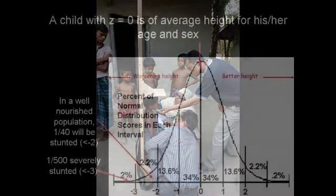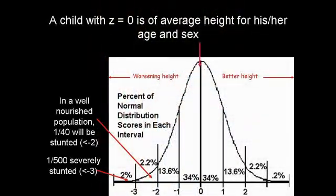What we then get is a so-called z-score — those of you keen on statistics will know this is a normal deviate. A child at the average position will have a z-score of zero. As height gets better or worse, the z-score becomes more positive or more negative. We take as our cut-off point for stunting a z-value of minus two. All children in that area are showing some degree of stunting. In a normal population that will be about one in forty people, and for severe stunting about one in five hundred.